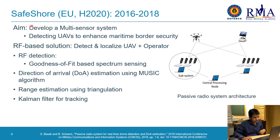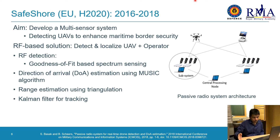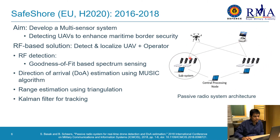Between 2016 and 2018, we participated in a project called SafeShore. The aim of this project was to develop a multi-sensor system for detecting UAVs passing a maritime border to enhance the security system. We proposed an RF-based solution to detect the drone and its controller. This is our passive radio system architecture — we had two identical subsystems and one central processing node. On each subsystem, we used four antenna arrays, one array with four antennas.